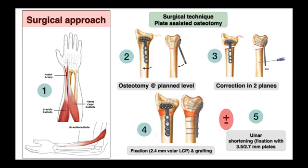We used a volar FCR approach between the radial neurovascular bundle and the FCR tendon. The brachioradialis tendon is tenotomized and a Z-plasty is done. The osteotomy is then performed at a pre-planned level parallel to the articular surface, making sure the osteotomy will end up proximal to the distal segment of the plate.